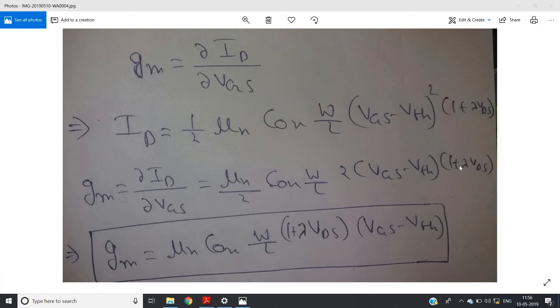These two terms will cancel each other in the numerator and denominator, and you will get gm = μn × Cox × (W/L) × (1 + λVDS) × (VGS - Vth).